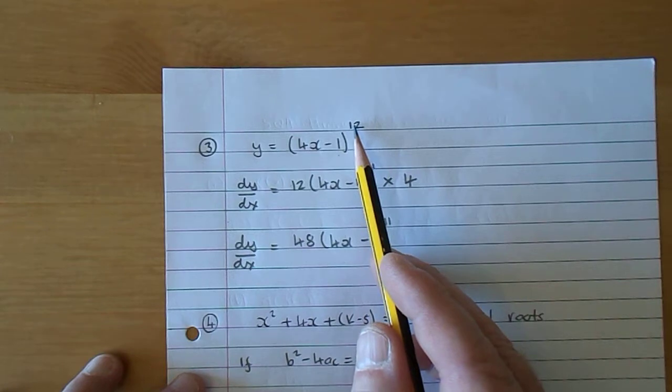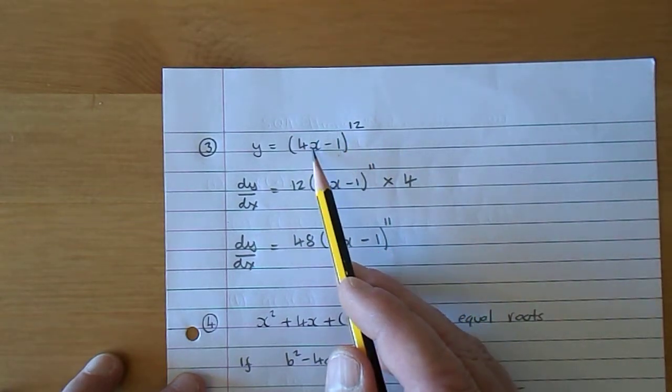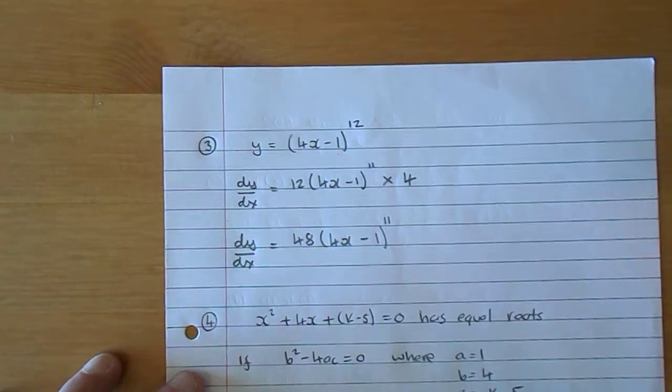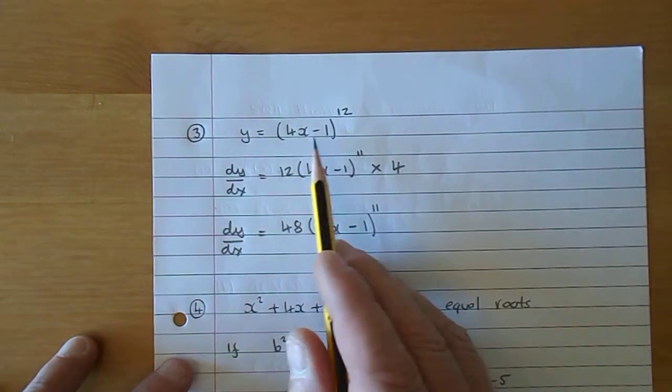Okay, now the process is relatively simple. You imagine that's a great big x and you do 12 times that to the power of 11. Obviously it's not an x, it's 4x - 1.